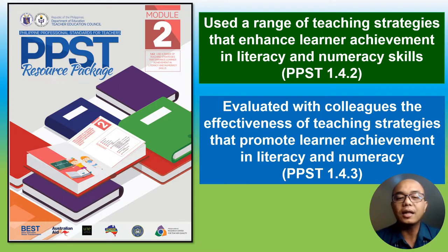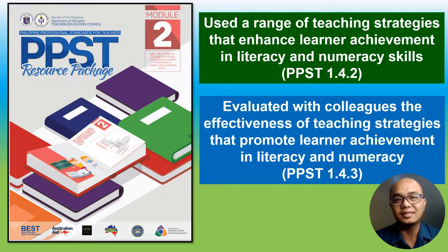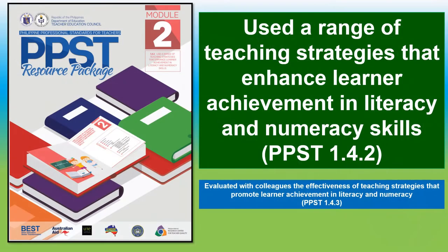And of course, we will use this module to better understand the meaning of the Use of Range of Teaching Strategies that Enhance Learner Achievement in Literacy and Numeracy Skills. This is a classroom observable indicator for Teacher 1 to Teacher 3, meaning it is required to be seen during classroom observation.